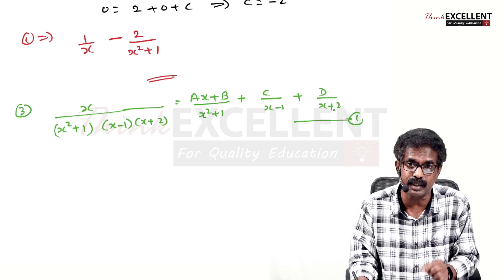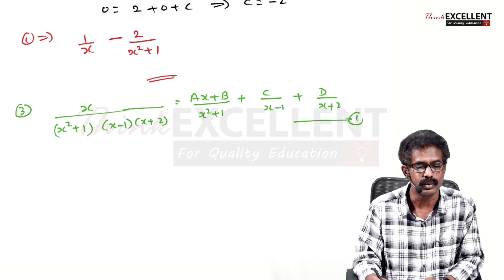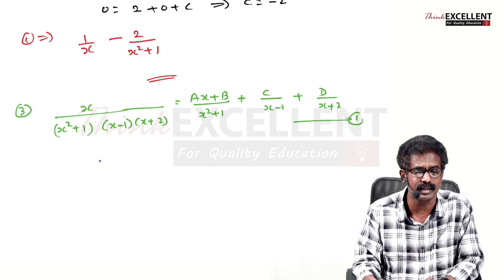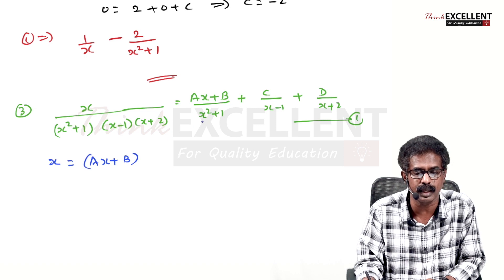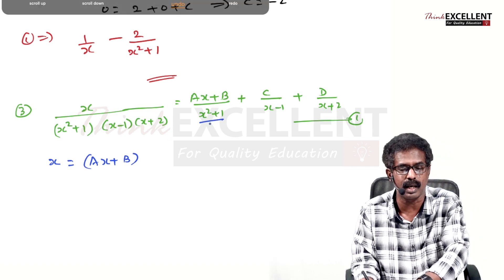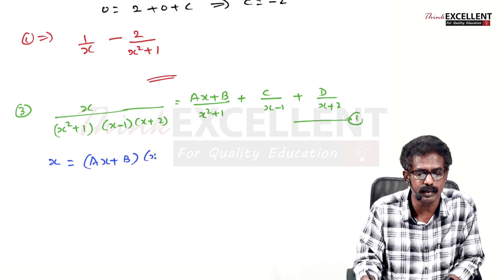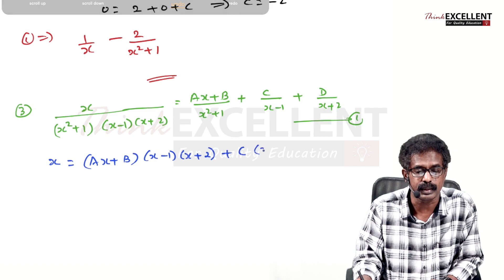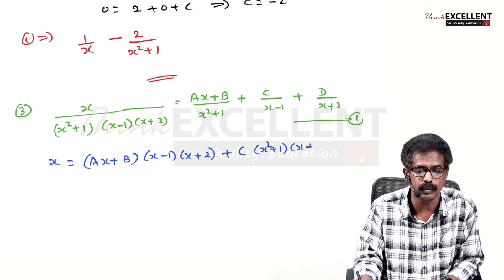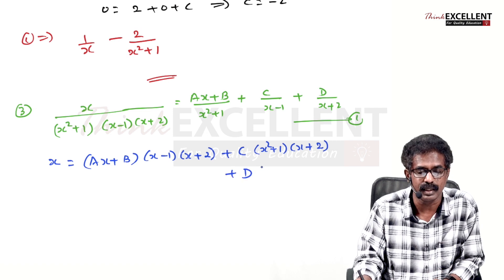Take LCM and cancel the denominator to get: x = (Ax+B)(x-1)(x+2) + C(x²+1)(x+2) + D(x²+1)(x-1).